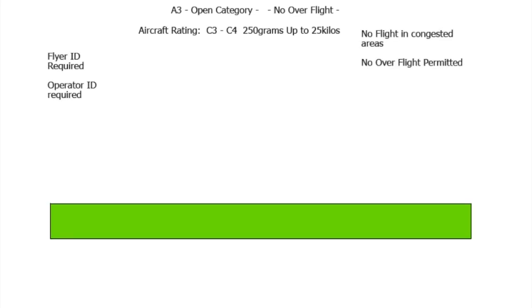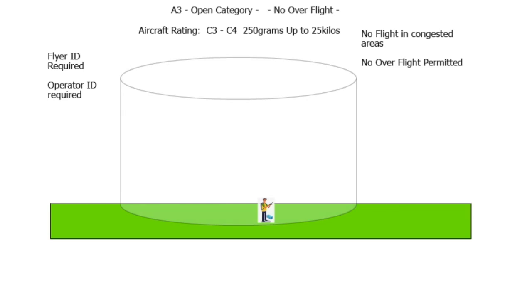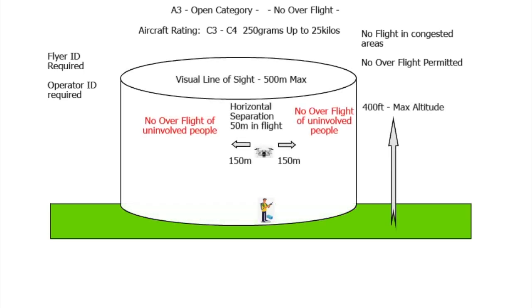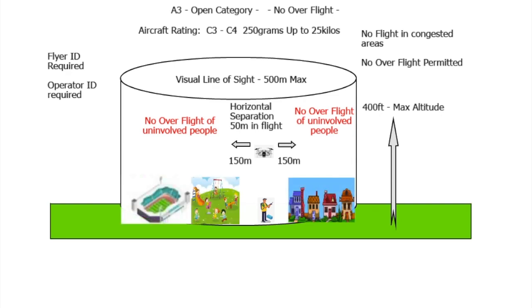Finally, we have the A3 open category. Basically, anything can fly in the A3 open category — 250 grams up to 25 kilos — in the countryside, away from everyone else. You cannot fly in a built-up area, you cannot fly near events, and you cannot fly in recreational areas.